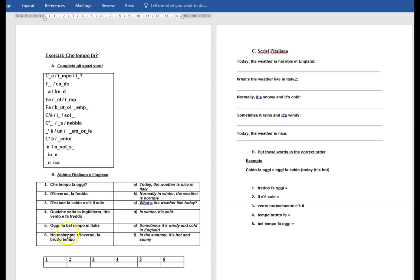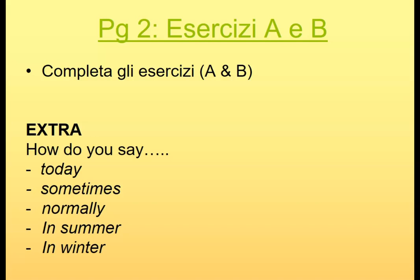Remember: in Italian, anything with -mente on the end is the equivalent of -ly in English — normalmente means normally, generalmente means generally, raramente means rarely. And now: how would you say today, sometimes, normally, in summer, and in winter? Oggi means today; qualche volta — sometimes; normalmente — normally; d'estate — in summer; d'inverno — in winter.